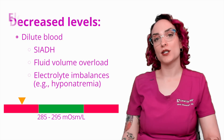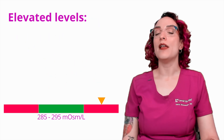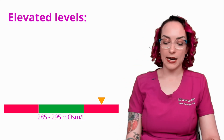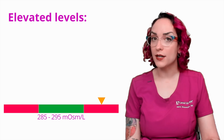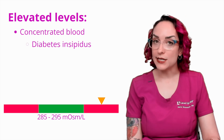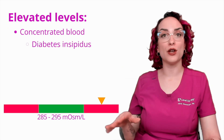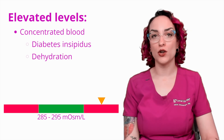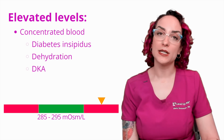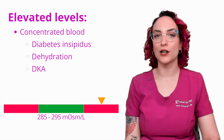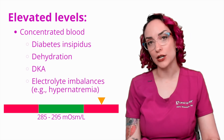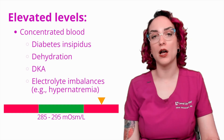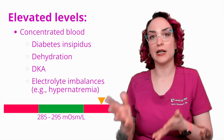Now contrast this with an elevated serum osmolality. In this case, we've got a lot of stuff dissolved in a little bit of liquid — concentrated blood. Some possible causes would be diabetes insipidus, where I'm losing a lot of fluid through the urine; dehydration of any variety or any kind of fluid volume deficit; DKA is also a potential cause; along with some different electrolyte imbalances such as hypernatremia. The point is: we have concentrated blood — too much stuff or too little fluid.